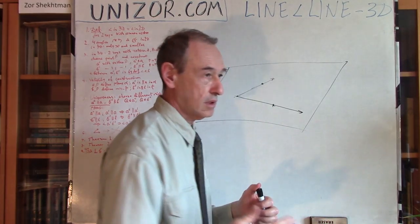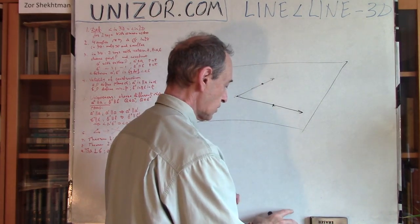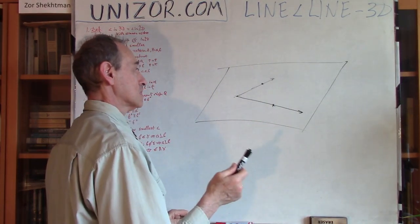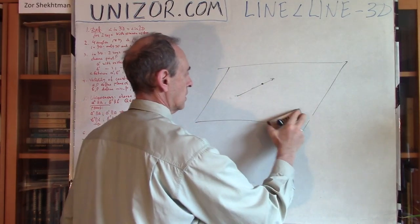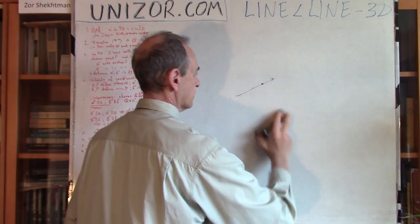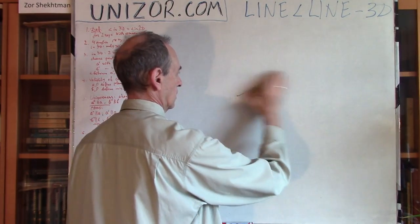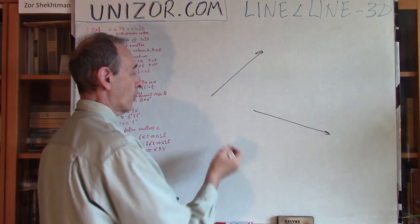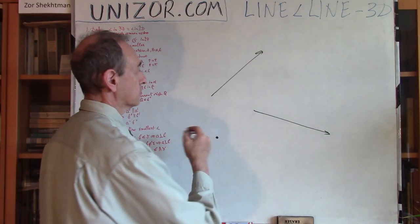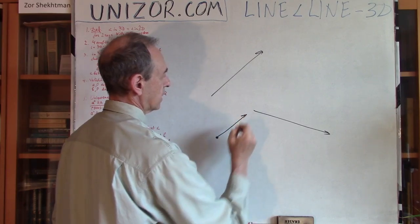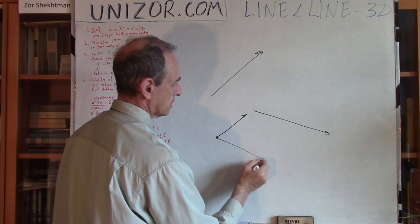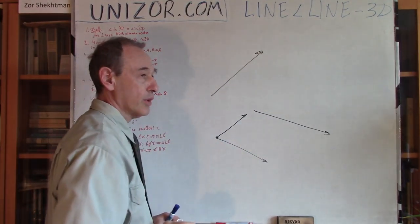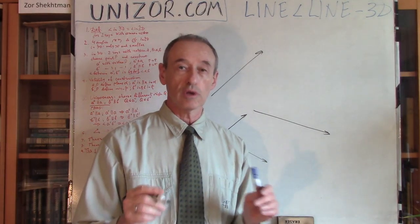Our next problem is to define an angle between two rays which do not have a common origin. This is actually very simple. We pick any point in space and draw one ray parallel to the first ray and similarly directed, and another ray parallel to the second ray and similarly directed. Can we draw a line parallel to another line through a point outside of that line? Yes — there is one and only one plane containing the line and the outside point, and within that plane we draw the parallel line.